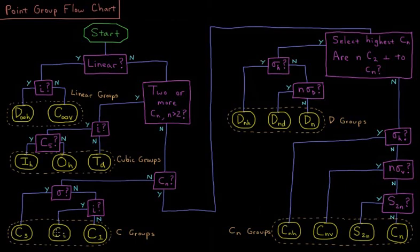If it doesn't have a principal axis, doesn't have a mirror plane, and doesn't have an inversion center, if it has none of these, then it has only identity, and it's a C1 point group. So those are the special case, pretty low symmetry groups.